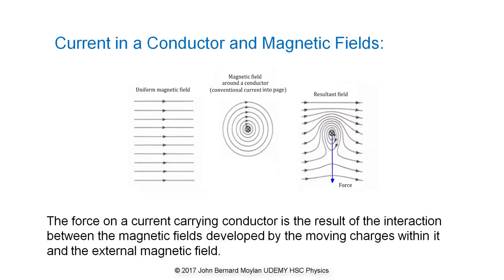The conductor carrying the current experiences a force distributed along its length, equal to the sum of the forces on the individual moving charges within it. The force is due to the interaction of the external magnetic field and the fields produced by the charges moving in the conductor. In terms of conventional current, the magnetic field around the conductor where the current is flowing into the page, as shown in the middle diagram, is clockwise.